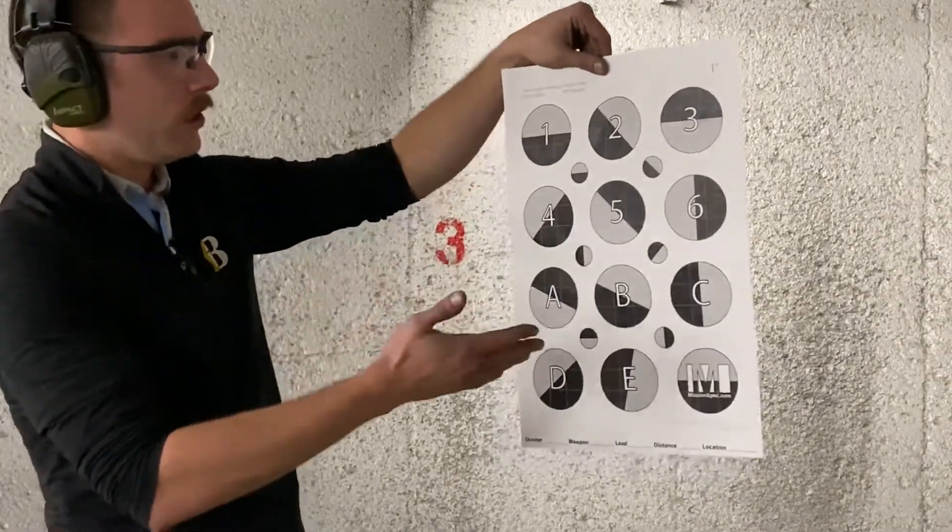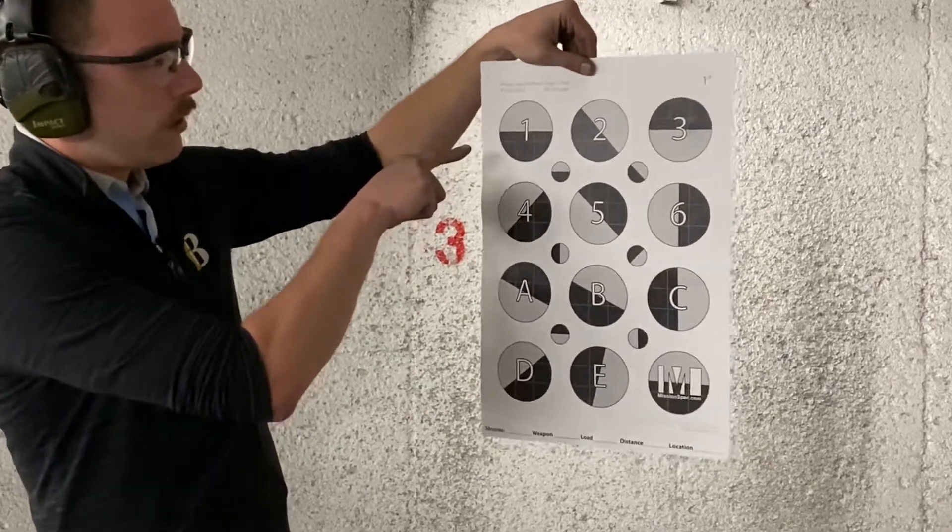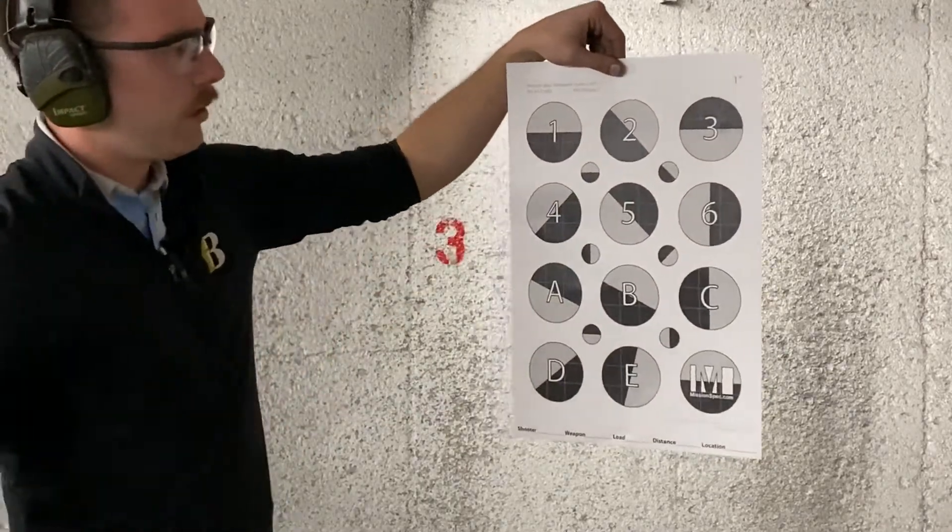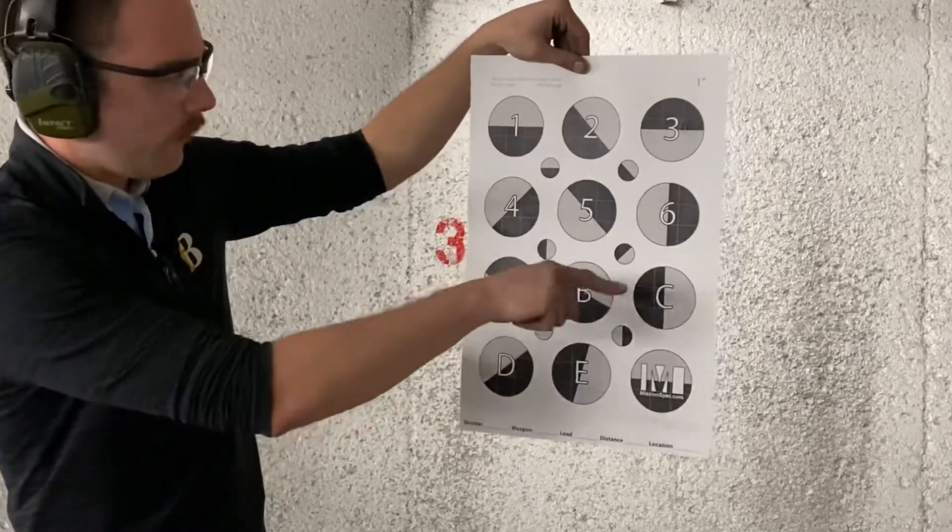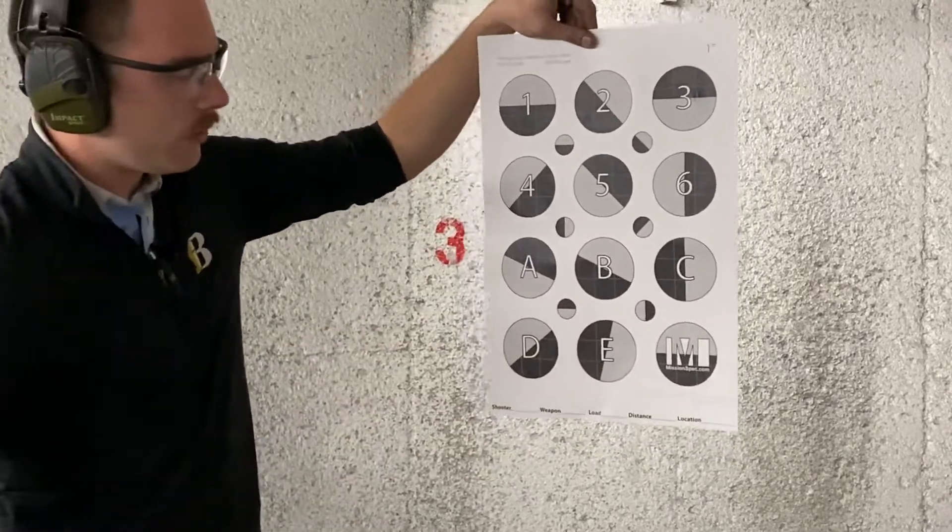To describe the target, we've got six circles up top here that are numbered one through six, and I've got a bunch of other circles down here. They're alphabetized and then the Mission Spec logo is down here at the bottom.